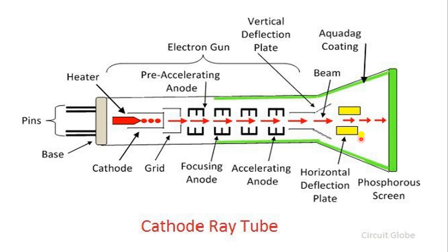If we want electrons to strike on the left, the horizontal deflection plate is used. By giving potential or power to the horizontal deflection plate, according to that the electrons will strike left or right on the phosphorous screen. So like this, using vertical and horizontal deflection plates, we strike the electron on the output screen — the phosphorous screen — and this is how we generate an image on the screen.